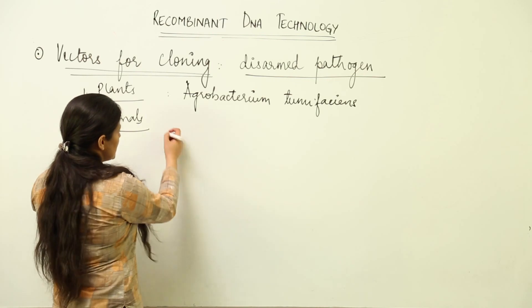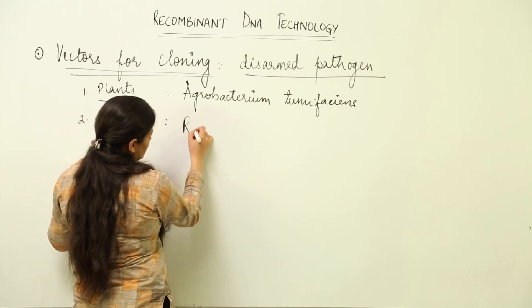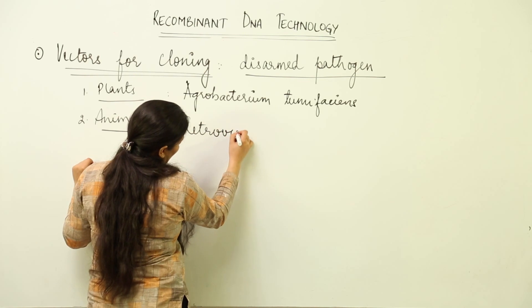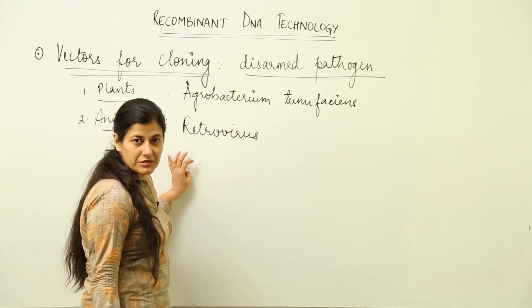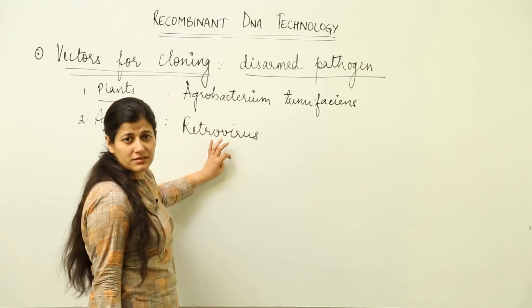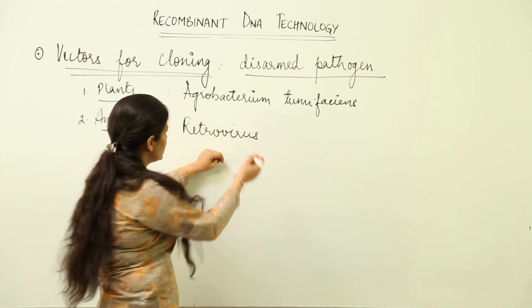In the same way there are certain retroviruses in humans and animals where they have the ability to make the normally acting cells cancerous. Now what do these pathogens do?